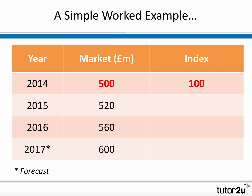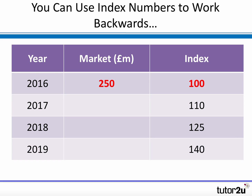Let's look at the answers. In 2015, the index would be 104 — in other words, a 4% change in market size. In 2016, it's gone up to 112, meaning the market is 12% higher than 2014. In 2017, further growth gives us 120, meaning the market is forecast to be 20% higher than 2014. You should also be able to work things backwards — you might be given an index and asked to work out the market size or some other data based on the index.